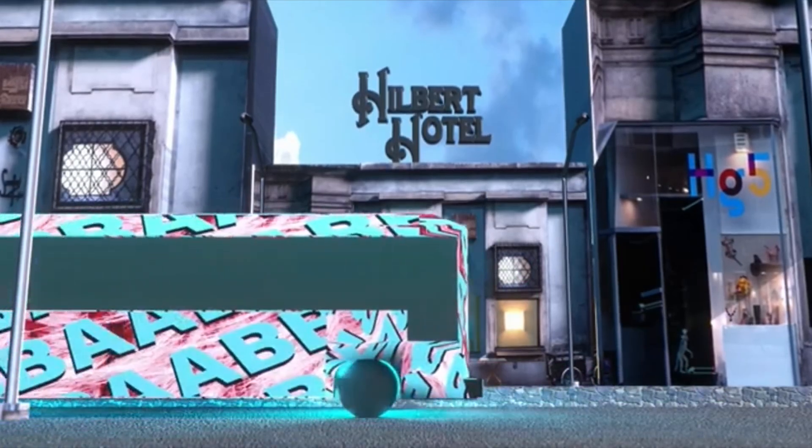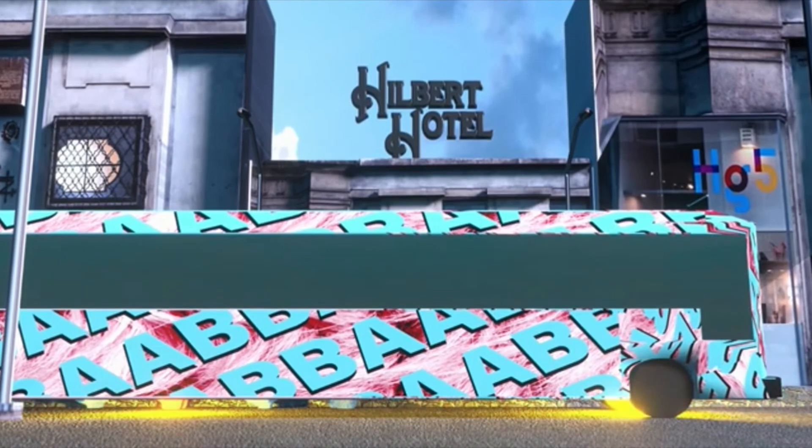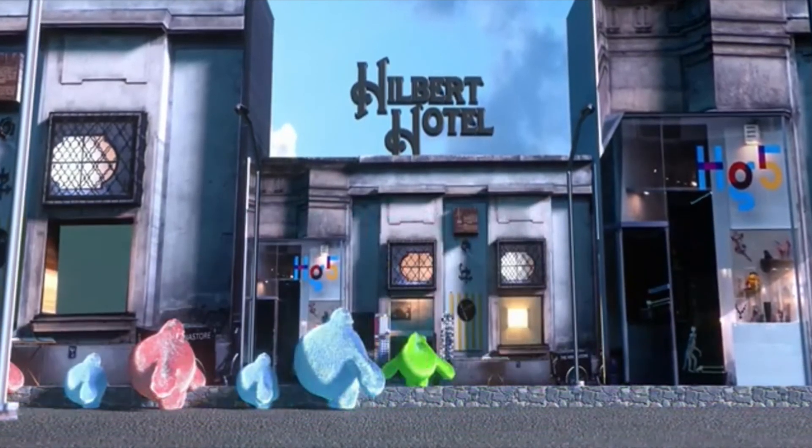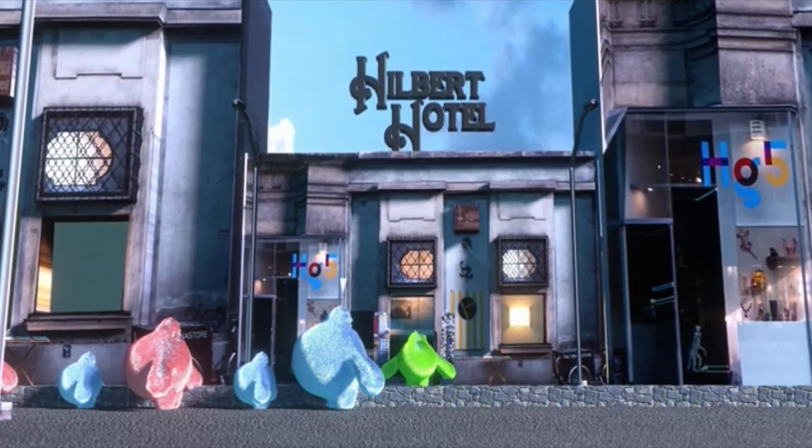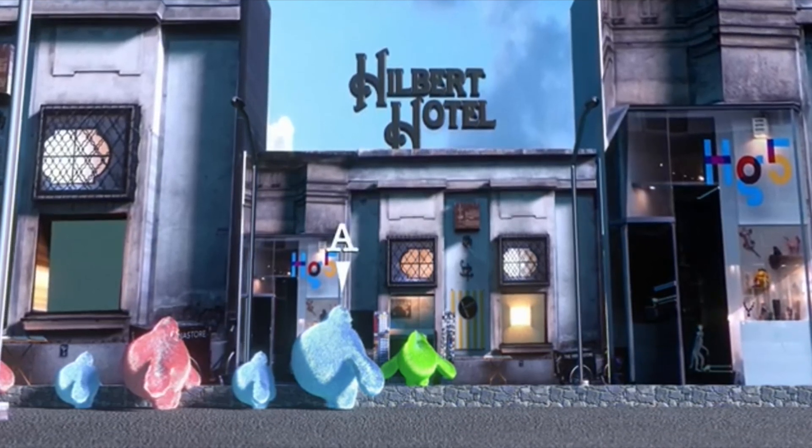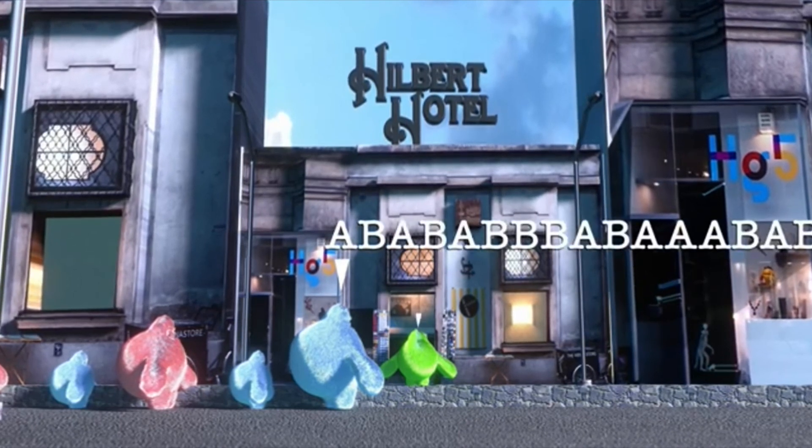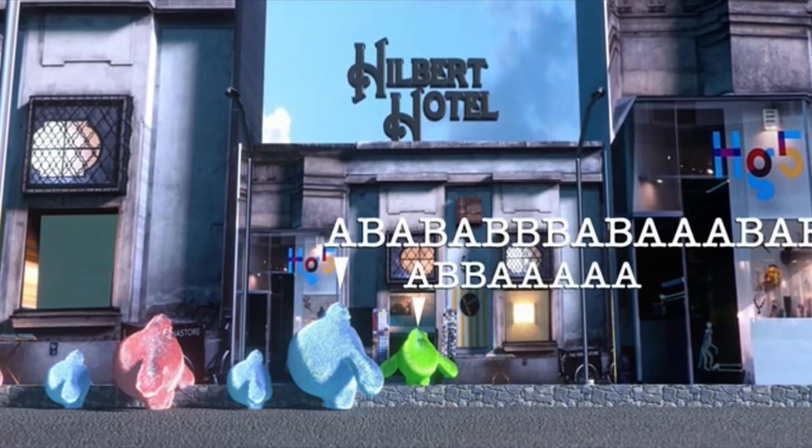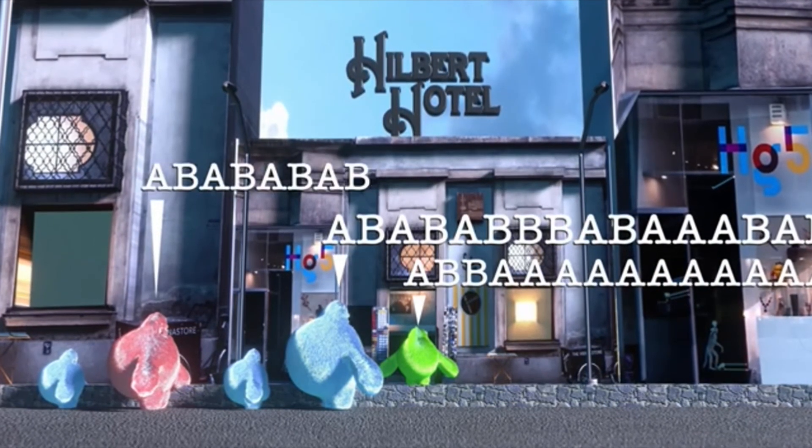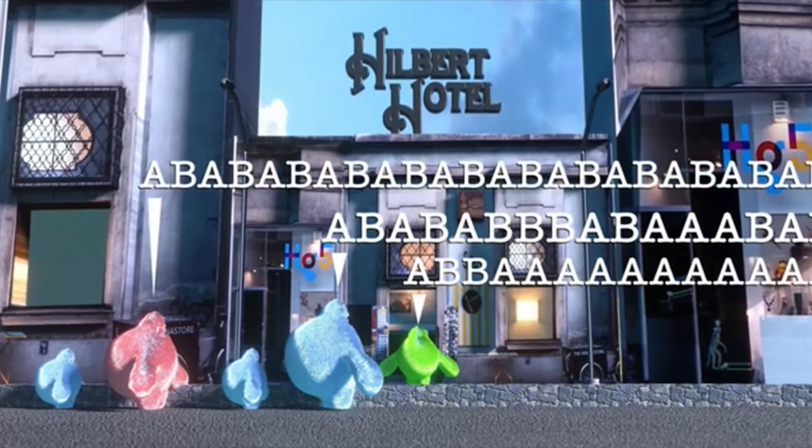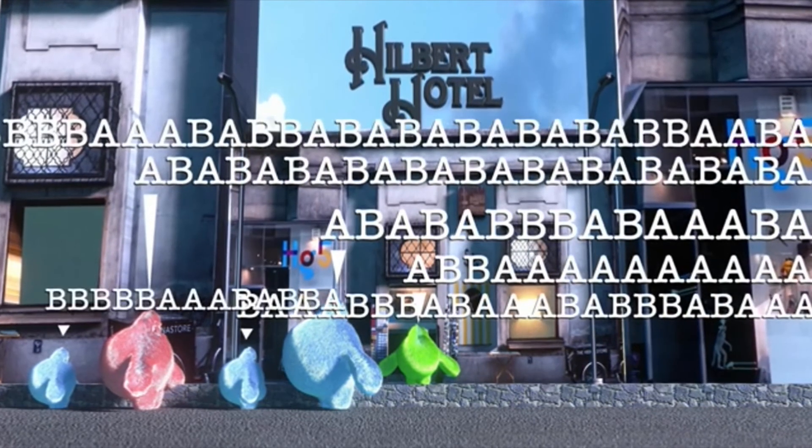But now a big bus pulls up, an infinite party bus with no seats. Instead, everyone on board is identified by their unique name, which is kind of strange. So their names all consist of only two letters, A and B, but each name is infinitely long. On this bus, there's a person with every possible infinite sequence of these two letters.